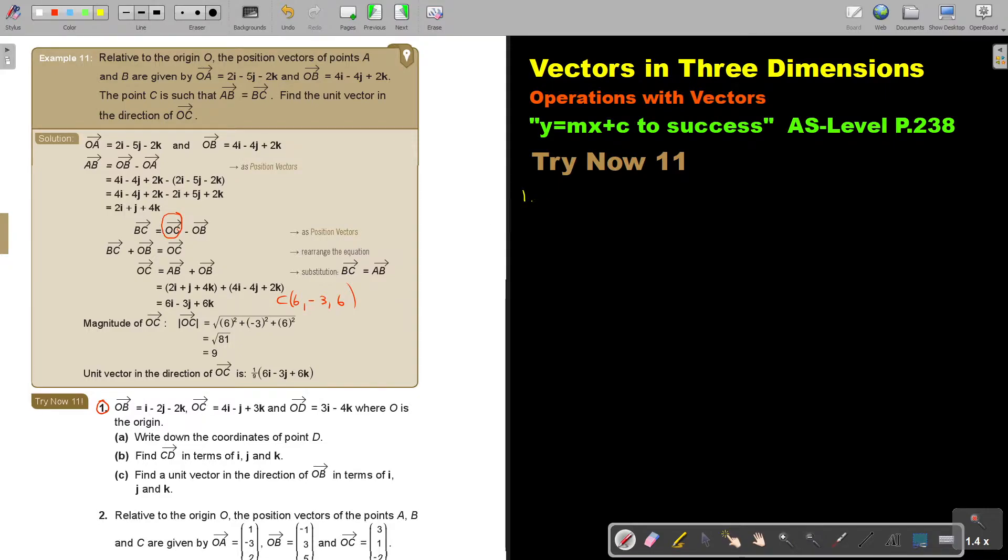I think it's good that I first write down all of them. So OB is i minus 2j minus 2k. OC is 4i minus j plus 3k. And OD equals 3i minus 4k, where O is the origin.